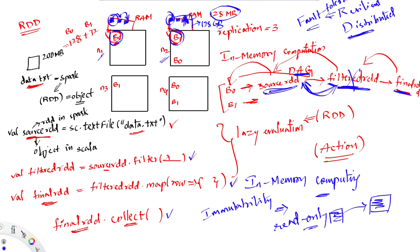There are some limitations of RDDs. RDD code can be opaque and developers might struggle to understand what the code is trying to compute. Also, RDDs are not optimized by Spark because Spark cannot understand what is inside the lambda functions — the developer has to handle all performance optimizations manually. To overcome these limitations, Spark provides other APIs called DataFrames and Datasets, which allow Spark to take care of optimizations. We will discuss more about DataFrames and Datasets in the upcoming sessions.